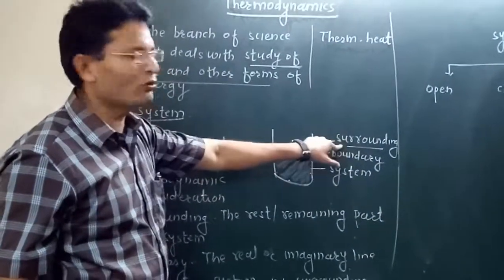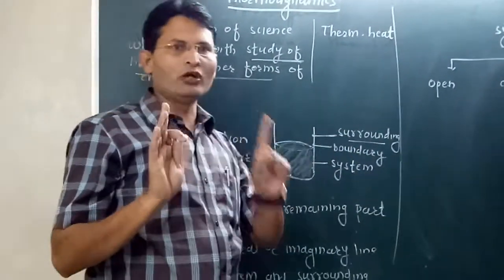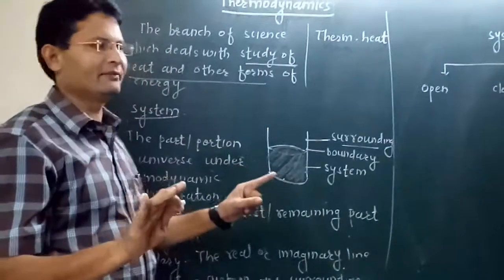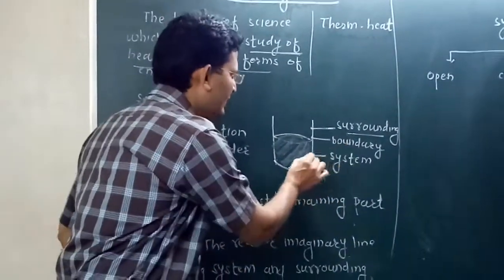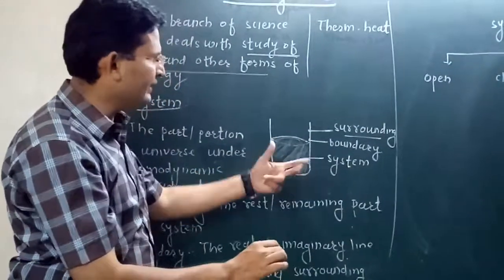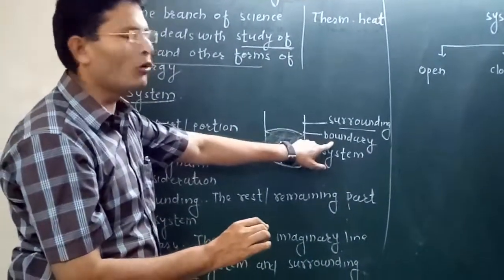System and surrounding cannot be one. There is a line, which might be real or imaginary, separating system and surrounding. This line is the boundary.